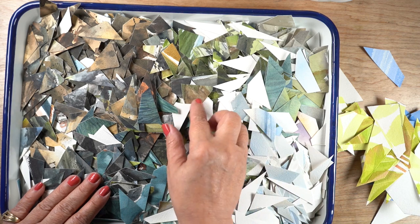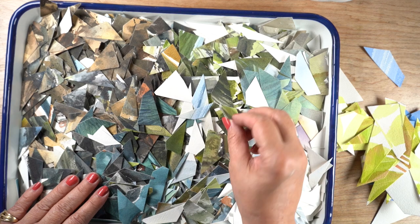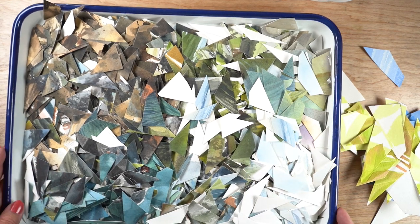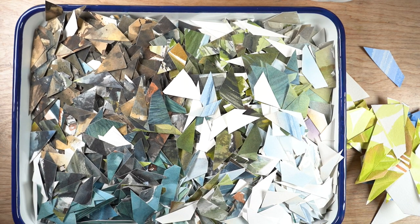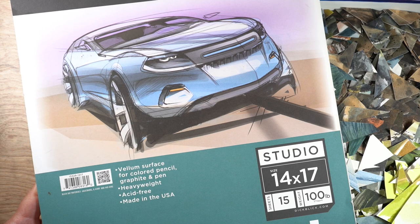You can see the big tray with all the little pieces versus my pile of larger pieces over there on the right, and they're kind of generally sorted by colors. This is the Blick paper that I used, and it says it's 100 pound.